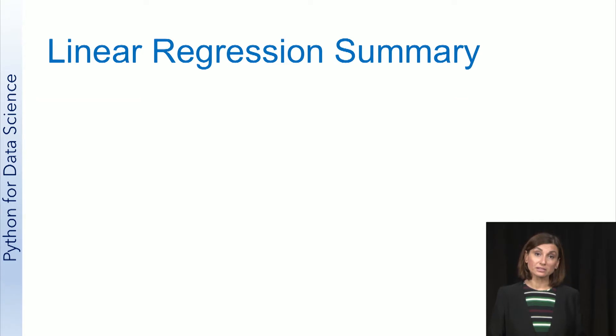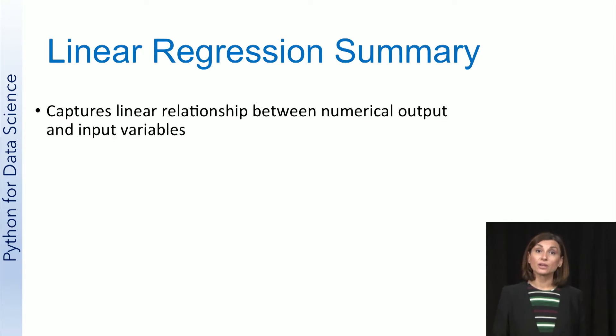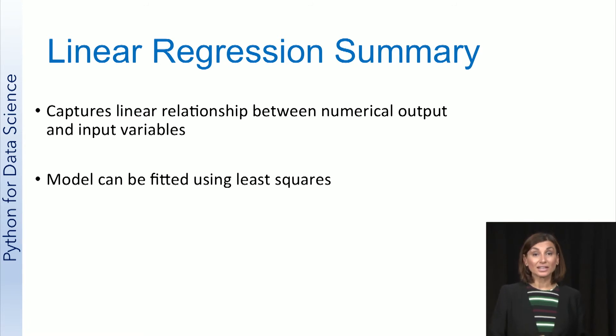To summarize, linear regression captures the linear relationships between a numerical output and the input variables. The least squares method can be used to build a linear regression model by finding the best fitting line through the samples. Let's now switch to live coding to see linear regression in action.